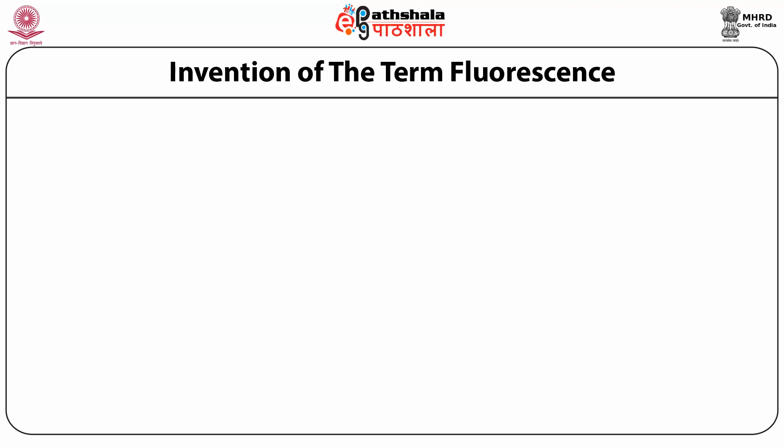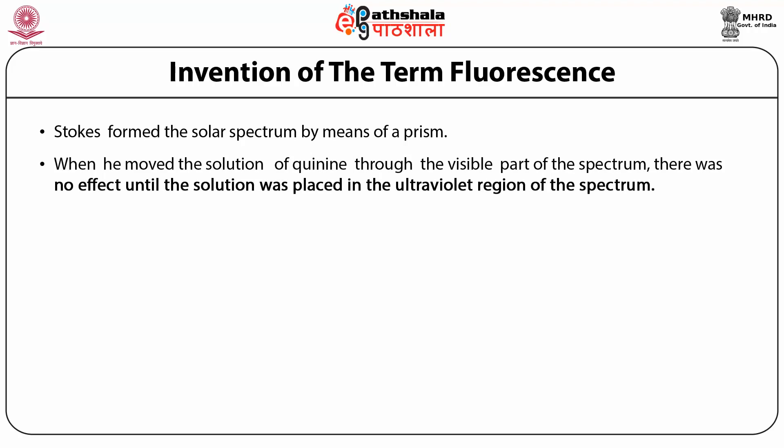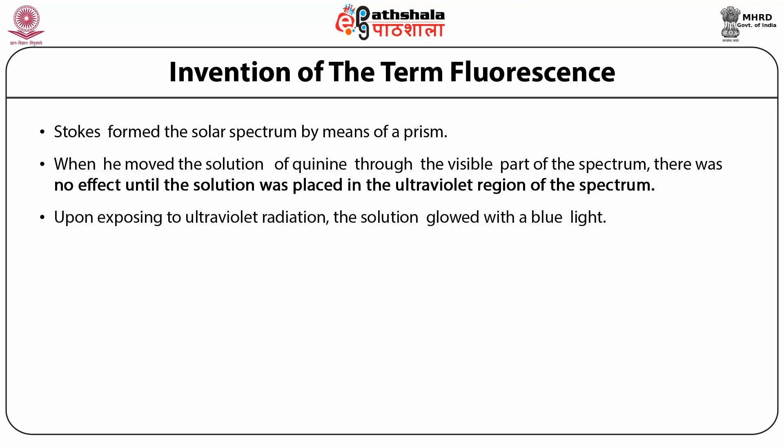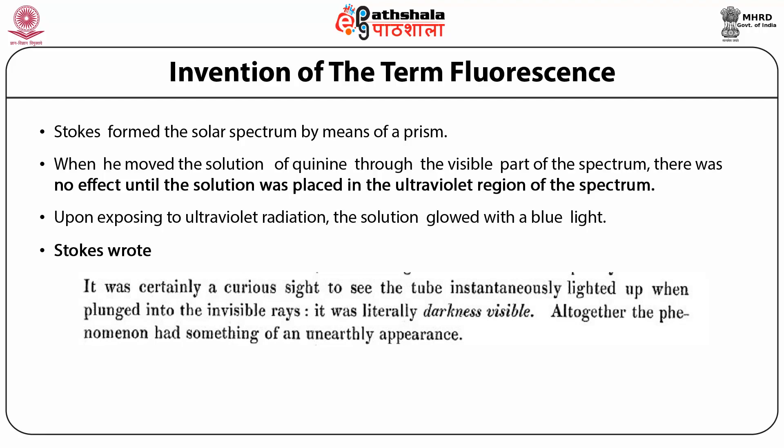One of Stokes' experiments was spectacular in its simplicity. Stokes formed the solar spectrum by means of a prism, resolving the colours of white sunlight. When he moved a solution of quinine through the visible part of the spectrum, there was no effect. But upon placing the solution in the ultraviolet region, it glowed with a blue light. Stokes wrote: 'It was certainly a curious sight to see the tube instantaneously lighted up when plunged into the invisible rays — it was literally darkness visible, although the phenomena had something of an unearthly appearance.'